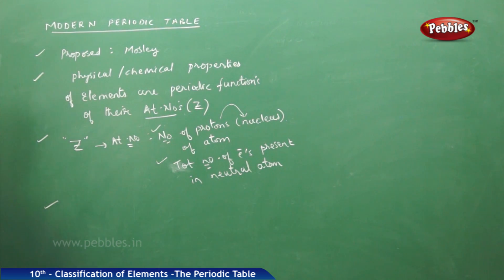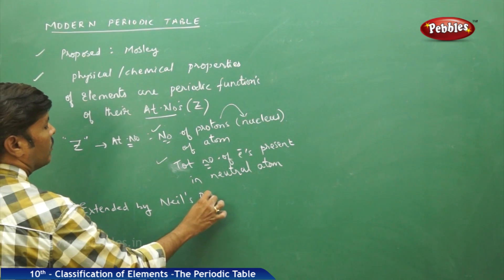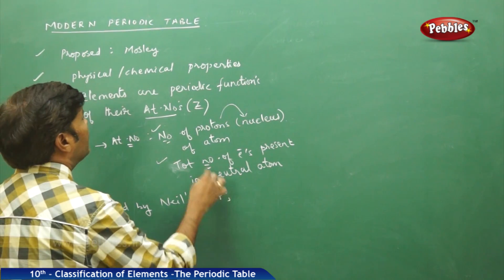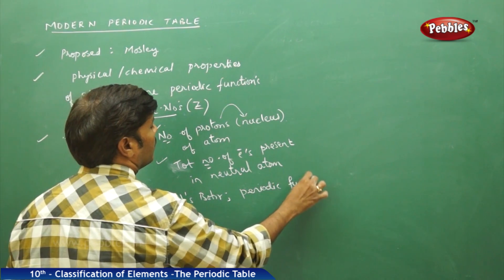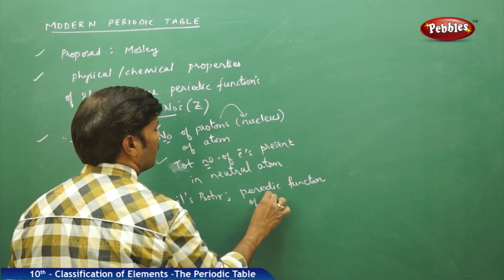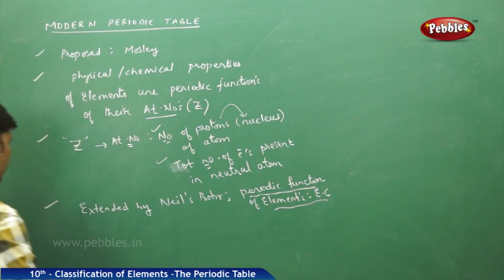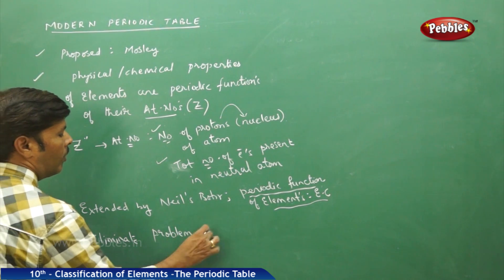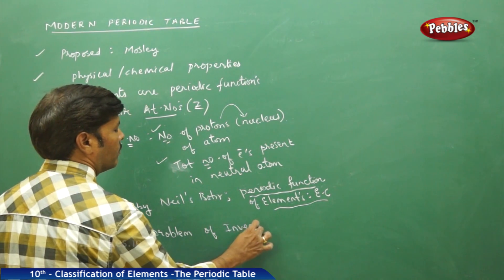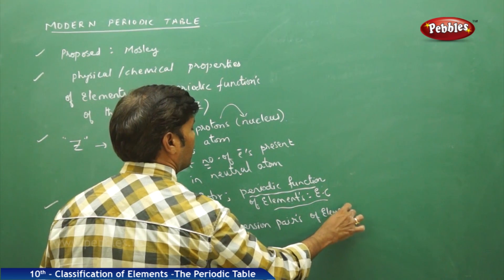Apart from this, this modern periodic table was also extended. The discussion was extended by Niels Bohr, and according to Niels Bohr, all the physical and chemical properties of elements are the periodic functions — the periodic function of elements is taken as electronic configuration. The main advantage of the modern periodic table is to eliminate the problem of inversion pairs of elements in the periodic table.